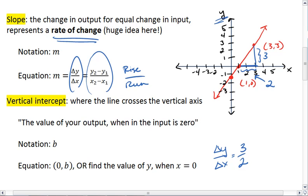Technically it's the value of your output or y value when the input or x is 0. In the general form of our equation where y equals mx plus b, the vertical intercept is represented by the b. We can write it as an ordered pair of 0 comma b or we find the value of y when x is 0.